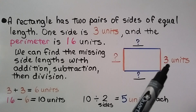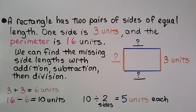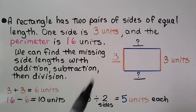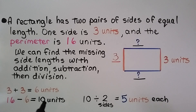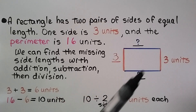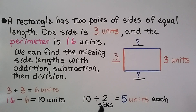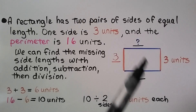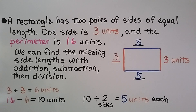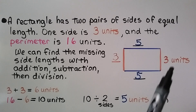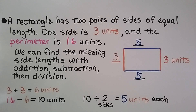We know if this side is 3 units, that this side must be 3 units. We can add 3 plus 3, which equals 6 units. We know it has a 16-unit perimeter. We can do 16 units minus the 6 units we found, which equals 10 units. That means both of these sides together must equal 10. We can do 10 divided by the two sides, and we know it equals 5 units each. We found the other three measures of length even though we only had one side, because it's a rectangle with two pairs of sides of equal length.